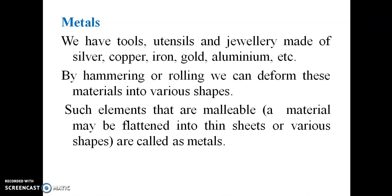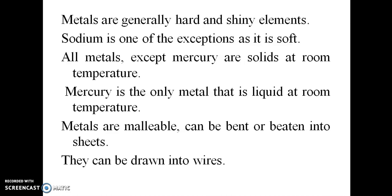We have tools, utensils, and jewelry made up of silver, copper, iron, gold, and aluminum. By hammering and rolling, we can deform metals into various shapes — metals are malleable. Metals are generally hard and shiny elements. Sodium is one exception as it is soft. All metals except mercury are solid.